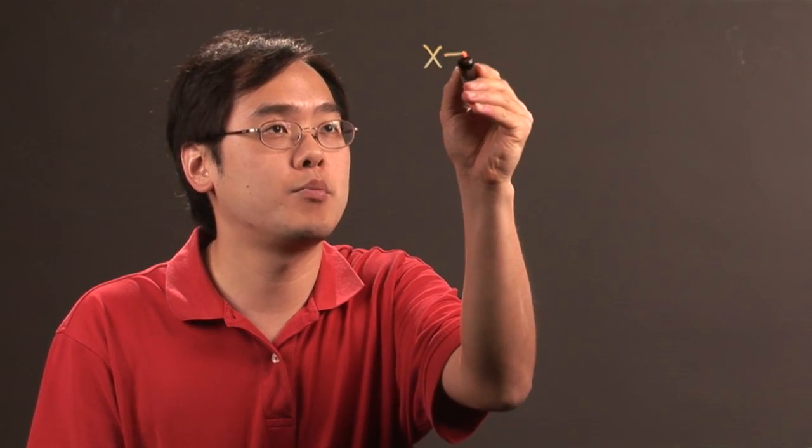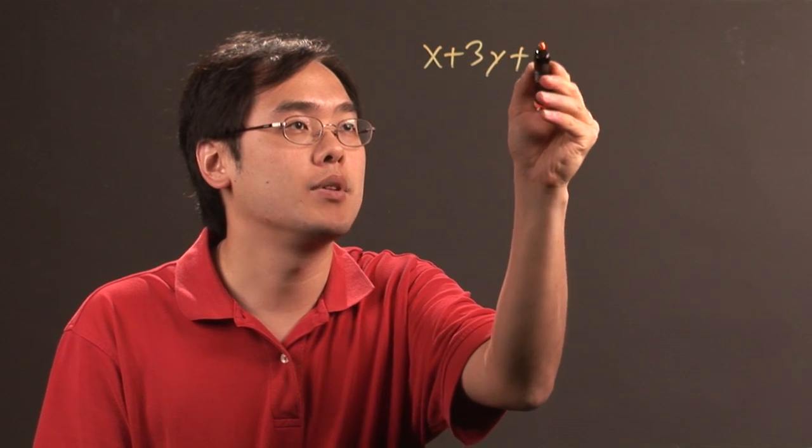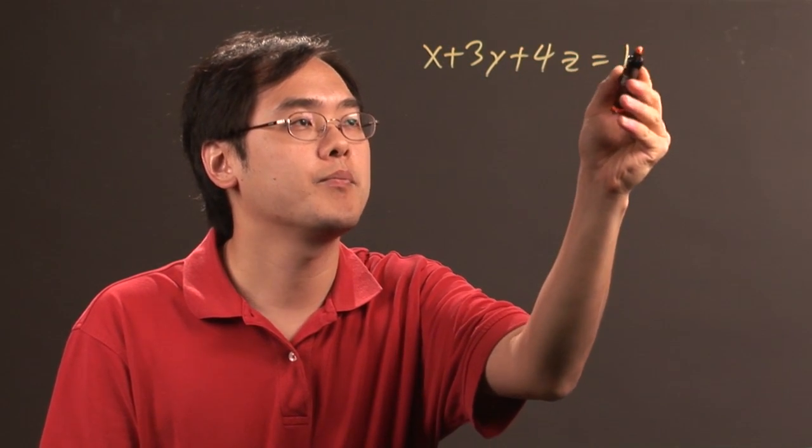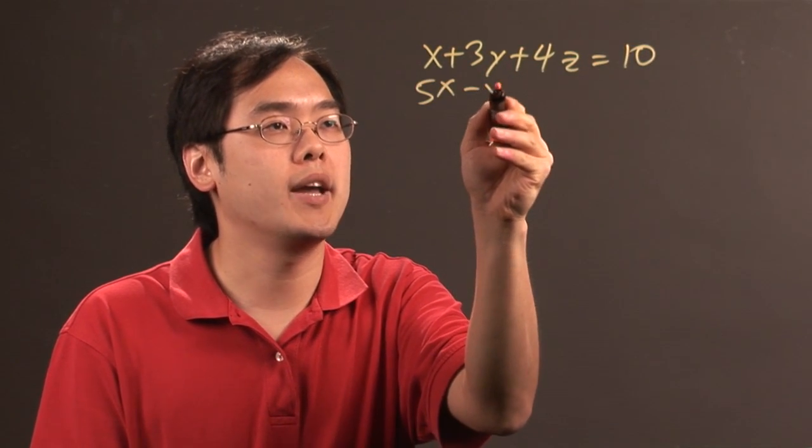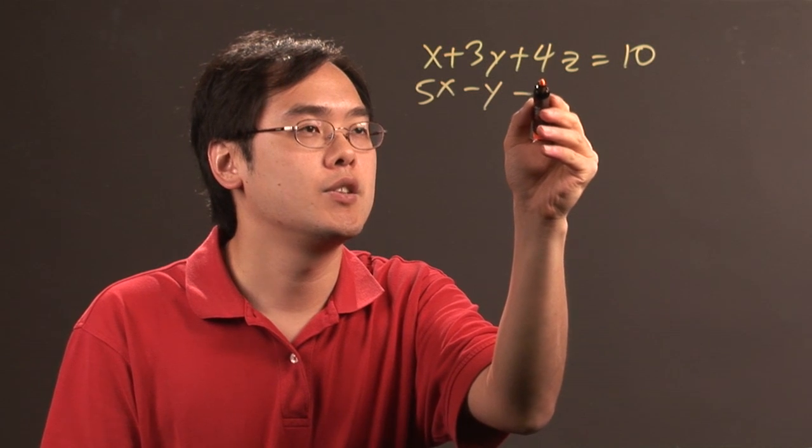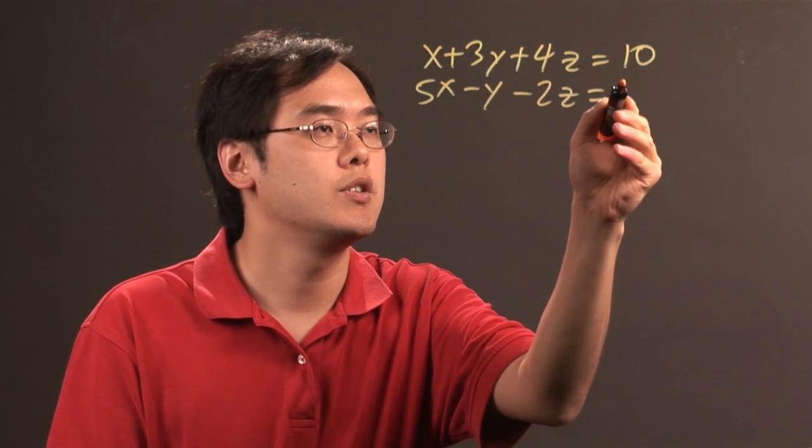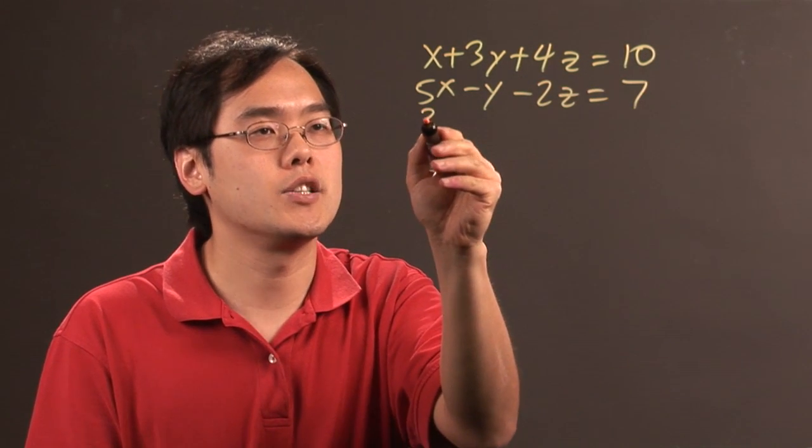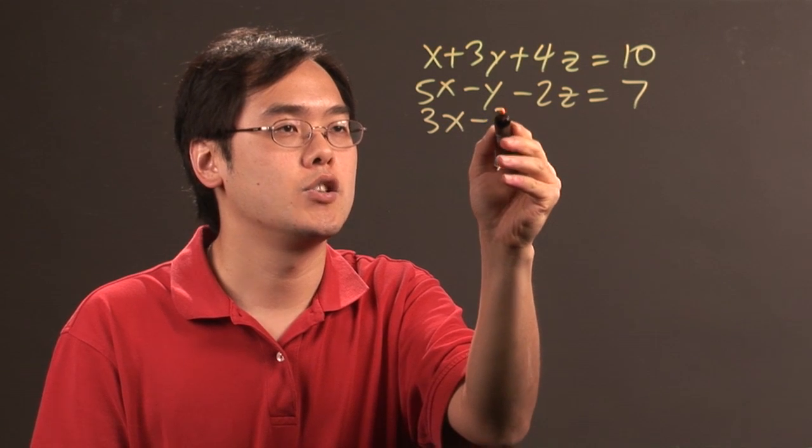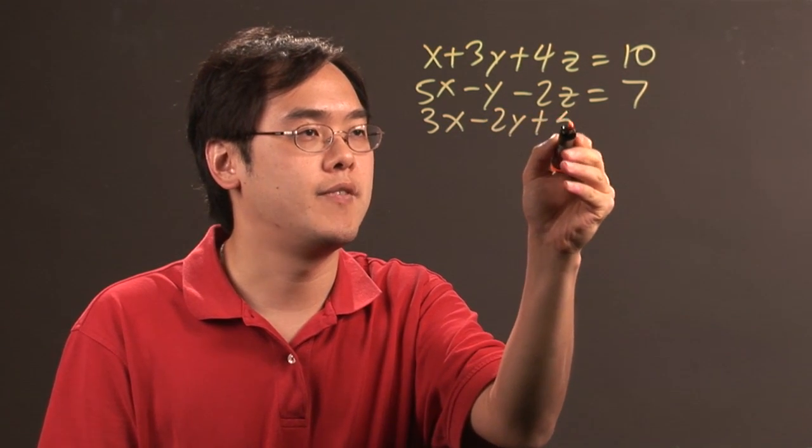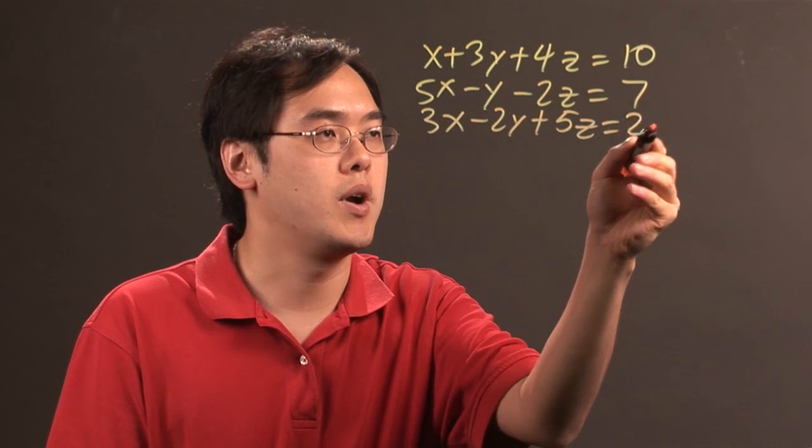So if you have for example x plus 3y plus 4z is equal to 10, 5x minus y minus 2z is equal to 7, and let's just say 3x minus 2y plus 5z is equal to 21.